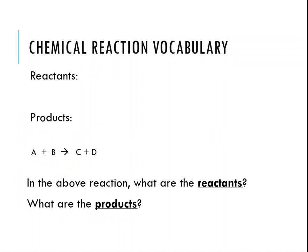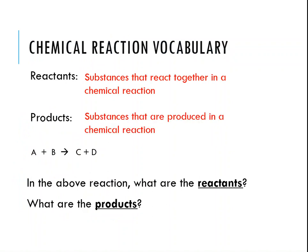First, let's talk about some vocabulary you'll see when working with chemical equations. We have reactants and products. Reactants are called that because they are the substances that react together when a chemical reaction takes place. Products are the things that are produced in a chemical reaction. The arrow shows the progress of the reaction — A combines with B to make C and D. So our reactants are A and B, and our products will be C and D.